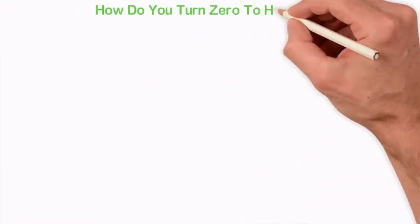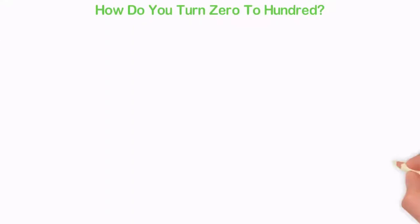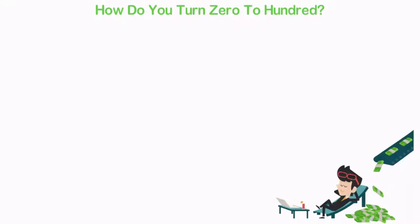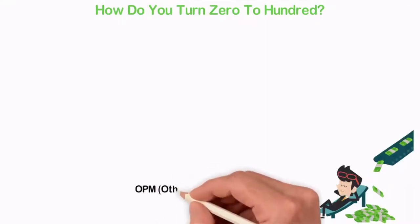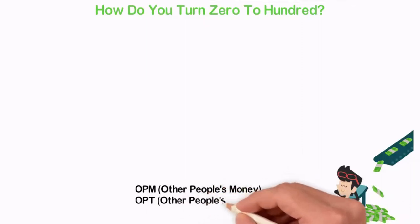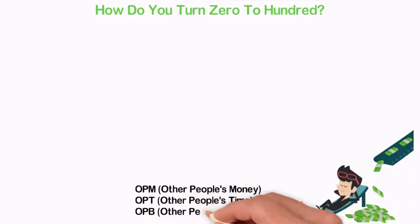How do you turn zero to 100? My life was drastically changed around the year 2007-2008. What happened was that, for the first time in my life, I came across the concept of OPM - Other People's Money. I later understood OPT - Other People's Time and OPB - Other People's Brains.